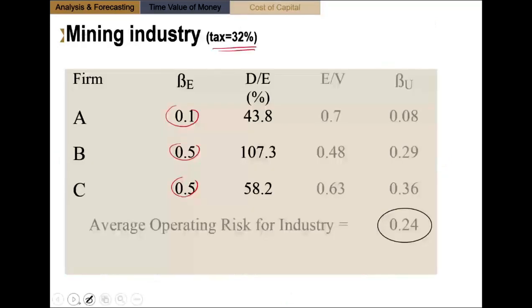So for each of those companies, I have the equity beta, that's my numerator. And I now need, I have my tax rate, I'm assuming 32% for all these companies. And I need to know the capital structure in each company because that's what I'm going to remove. And of course, the capital structure varies depending on which company you're looking at. This is the reason why all of this stuff, because it's so different than what we want, we have to remove this.